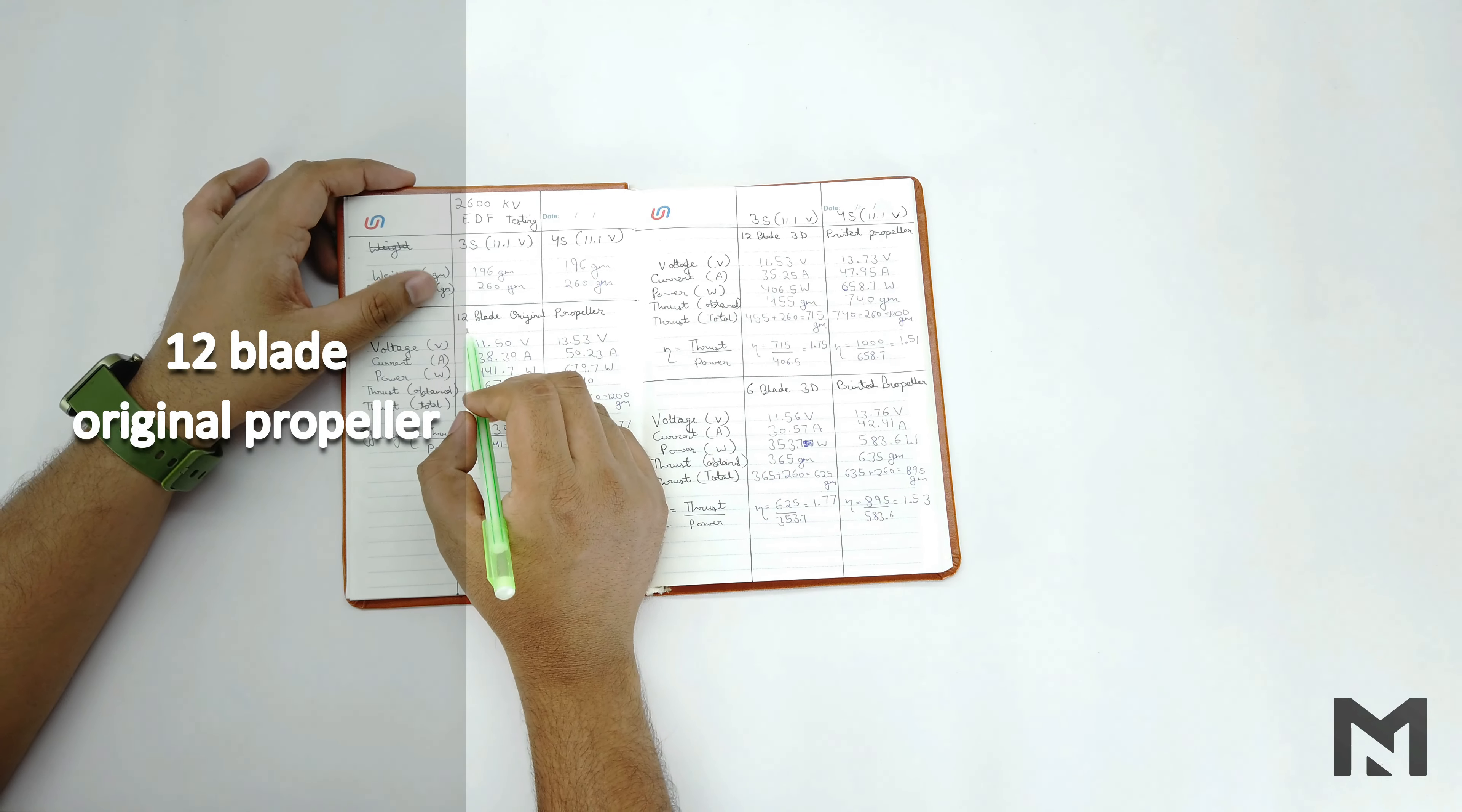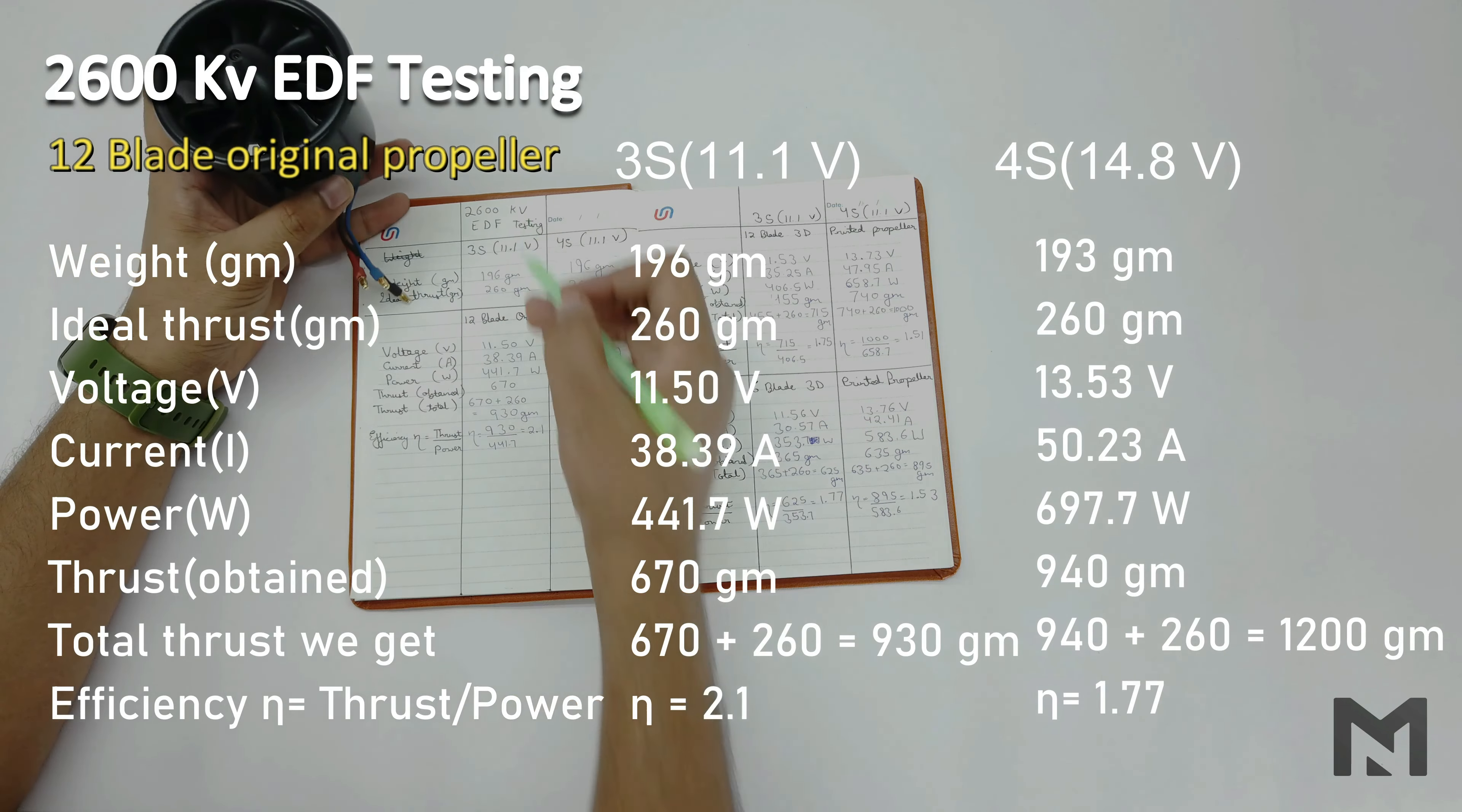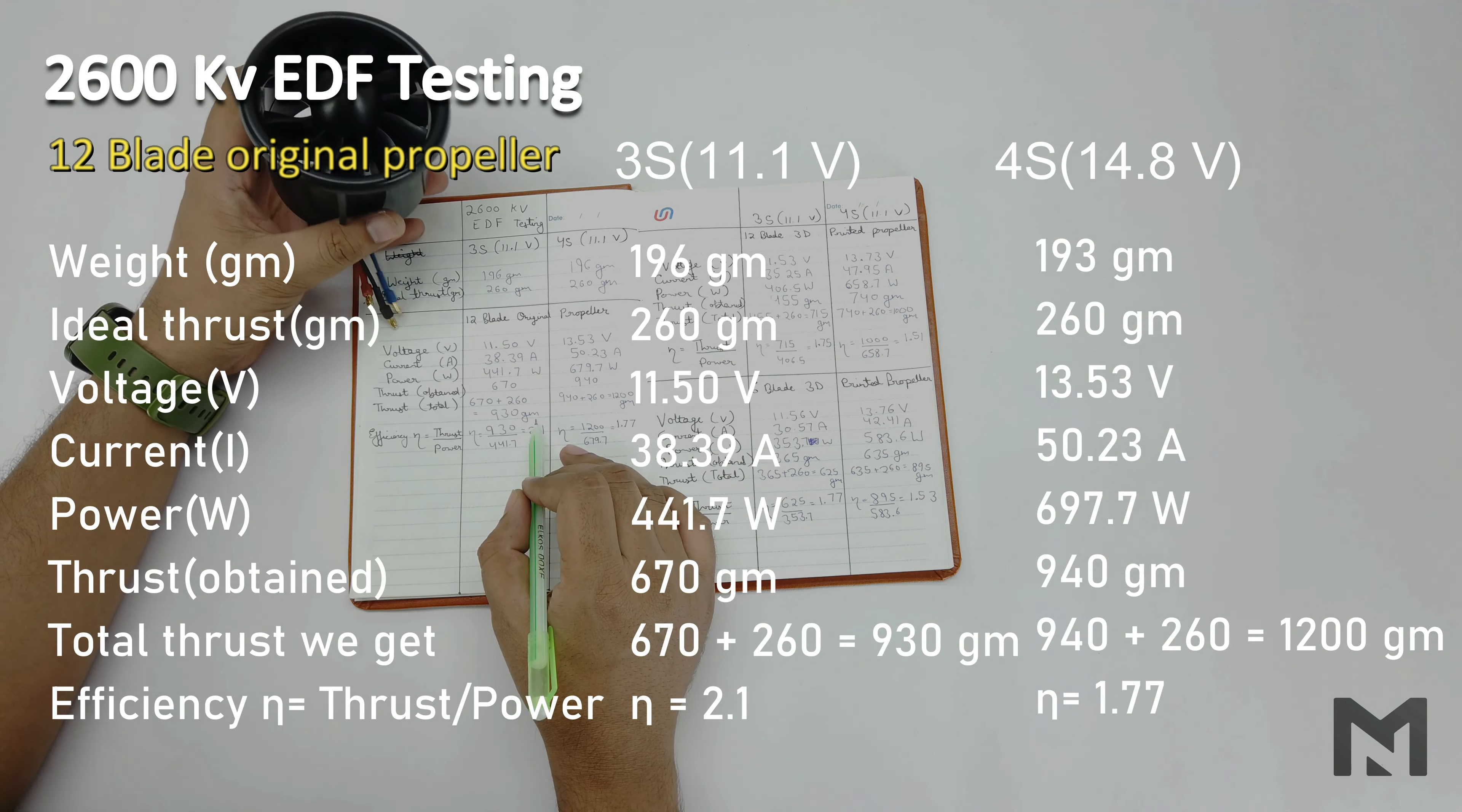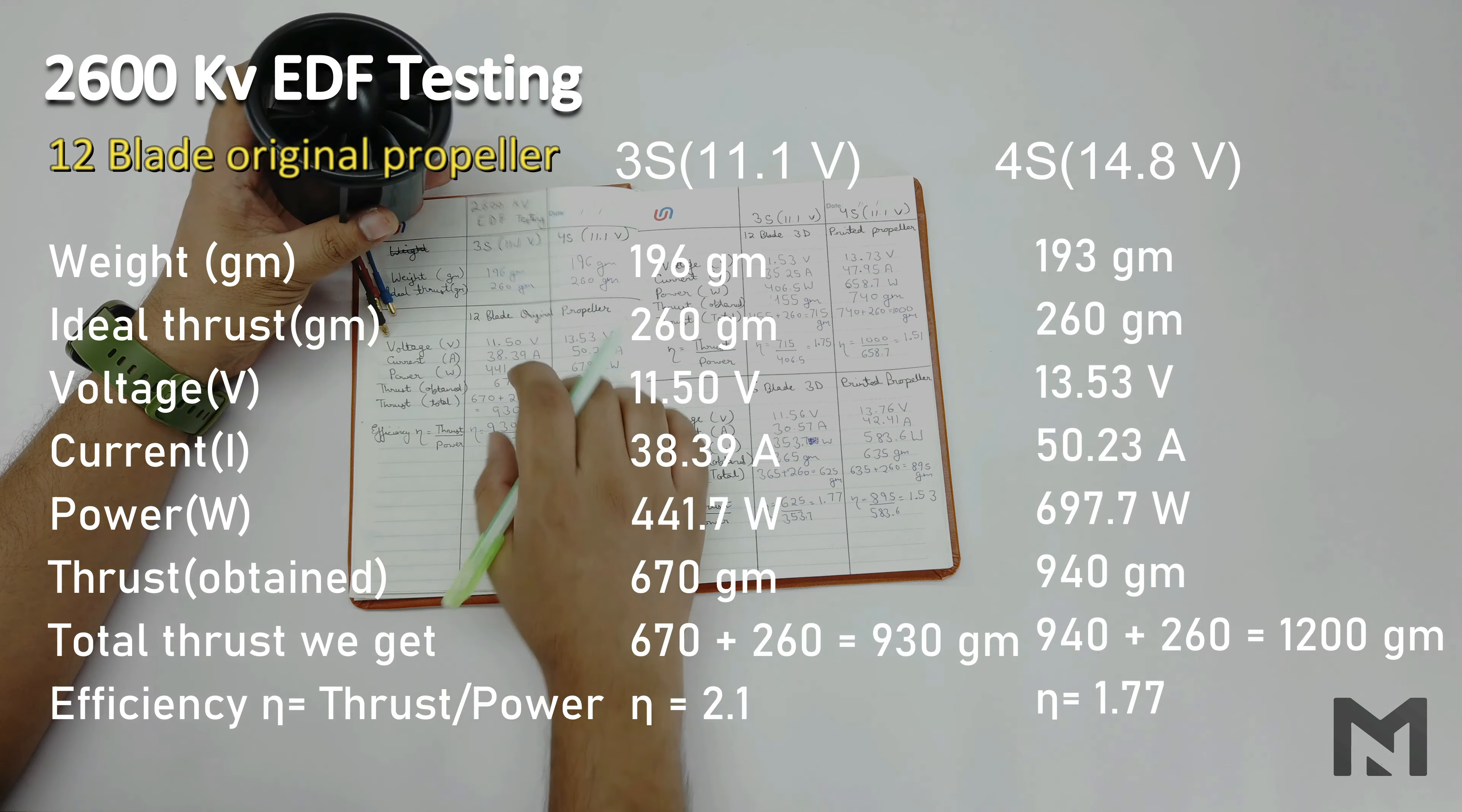Now let's do the thrust analysis. So I have done the analysis of all the three configurations. The original 12-bladed propeller when connected to the 3S battery gave us a thrust of 930 grams at an efficiency of 2.1, which is quite okay for this propeller. Usually EDF provides efficiency of around 2.1 or something.